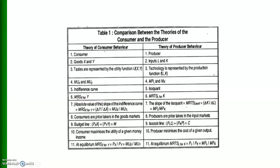In consumer behavior we have the marginal rate of substitution of X for Y, whereas in production theory we have the marginal rate of technical substitution between labor and capital. The absolute value of the slope of the indifference curve equals the MRS of X for Y, which equals ΔY/ΔX = marginal utility of X divided by marginal utility of Y.